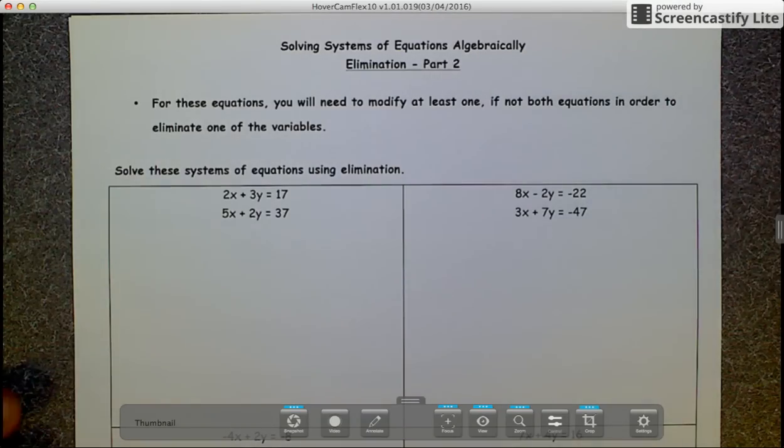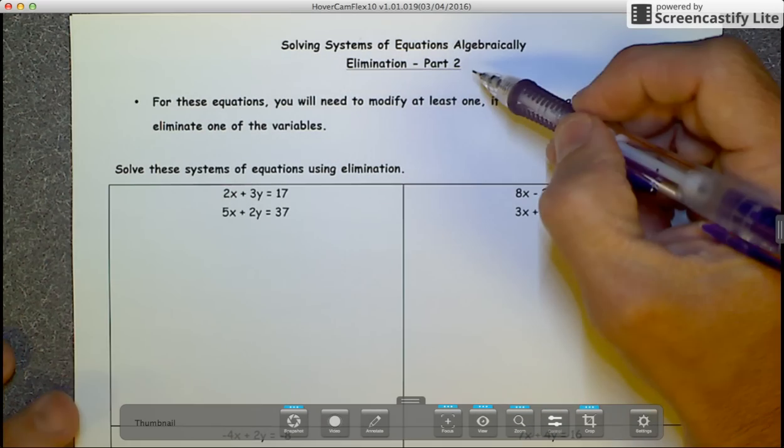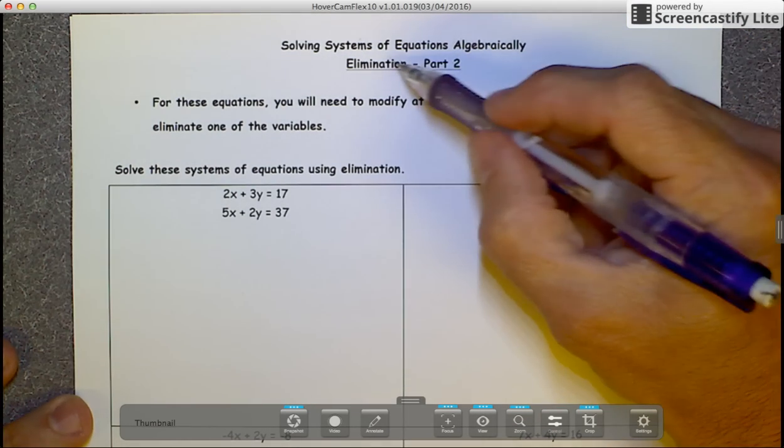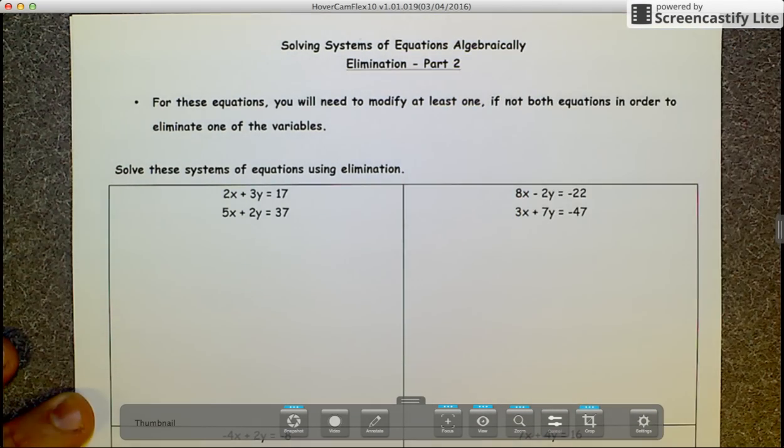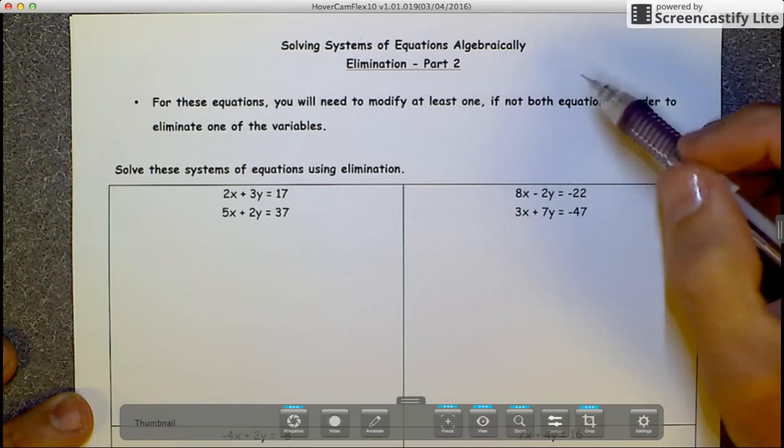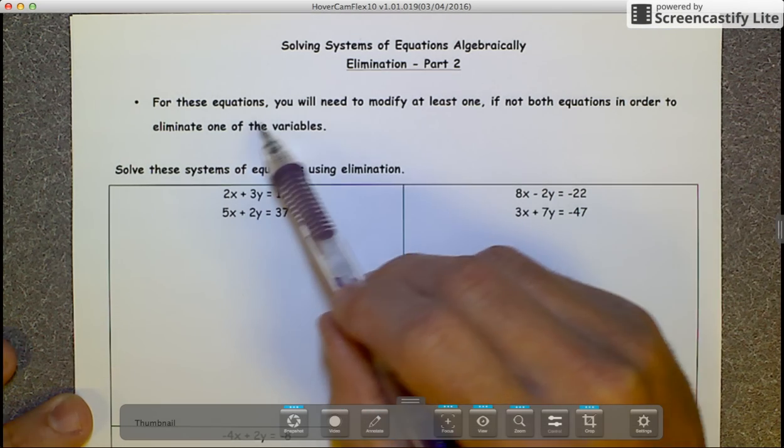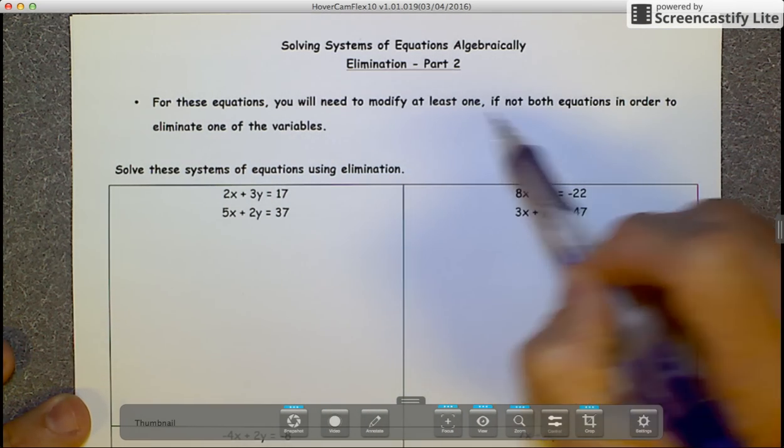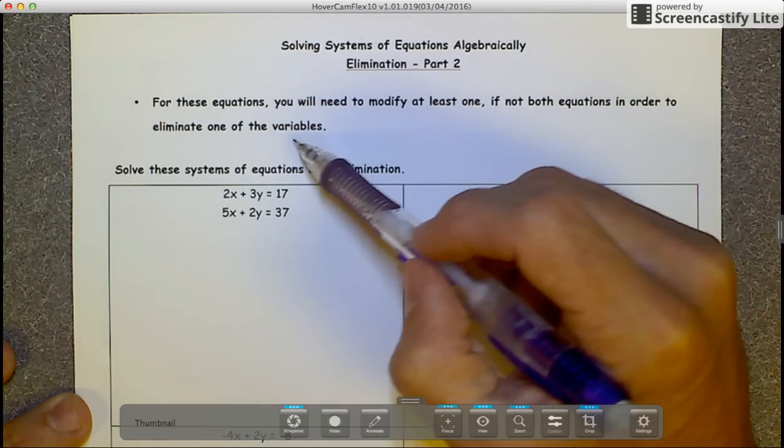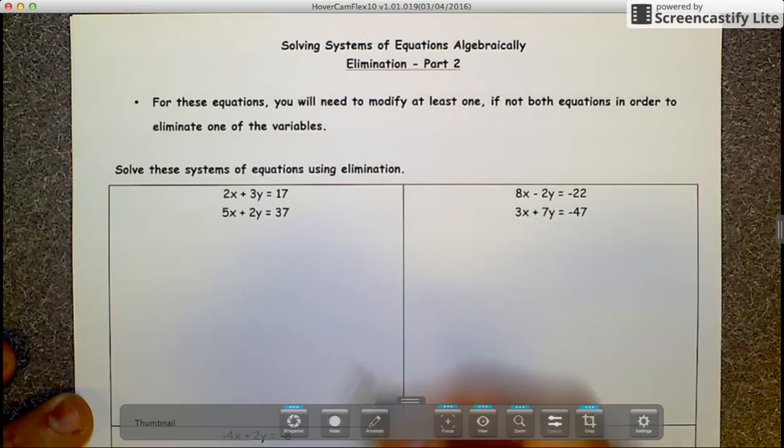Okay, welcome back. We are moving into systems of equations algebraically, elimination part two. Part two is just going to add to what we did on the first part. For these equations you will need to modify at least one, if not both equations, in order to eliminate one of the variables. So let's look at some of these equations.